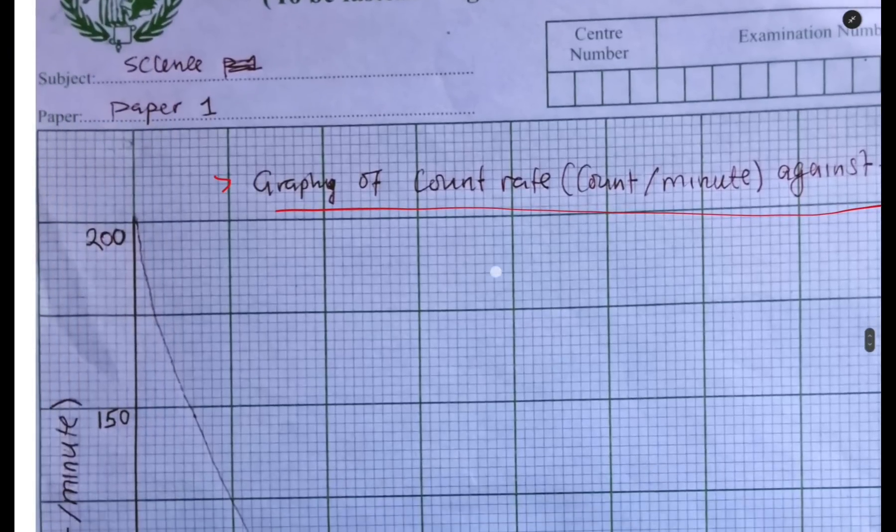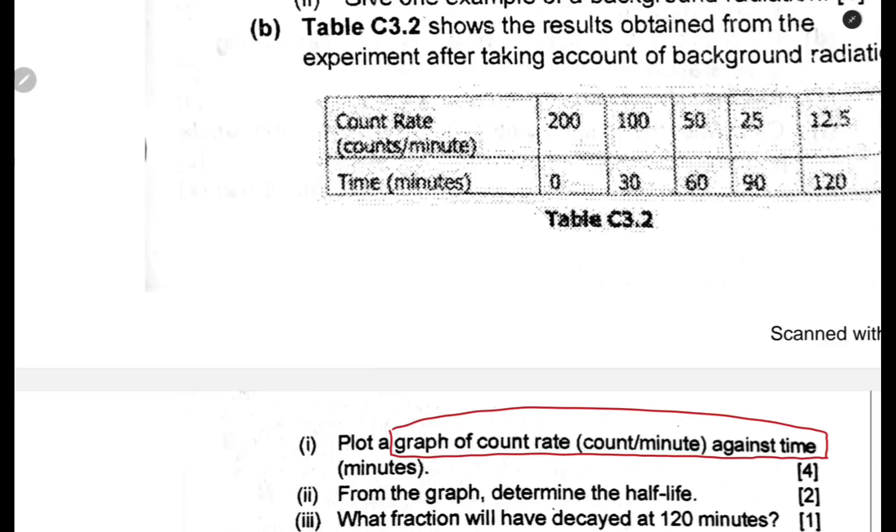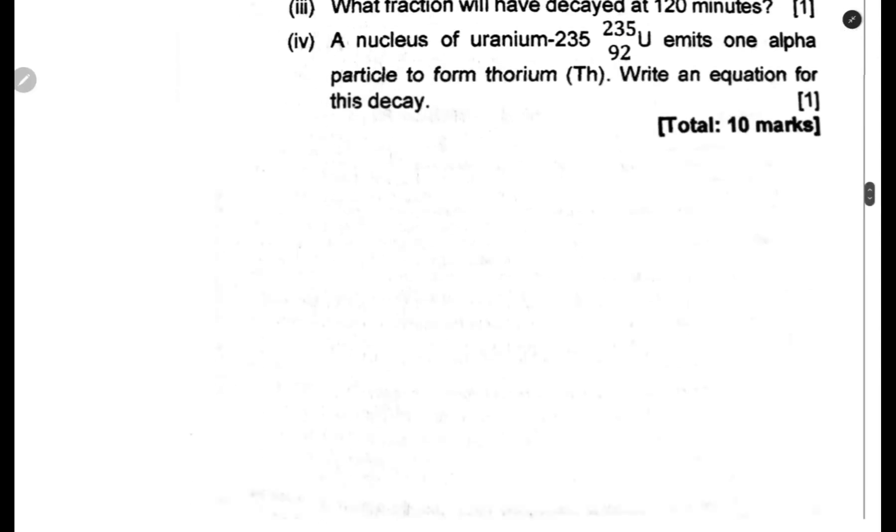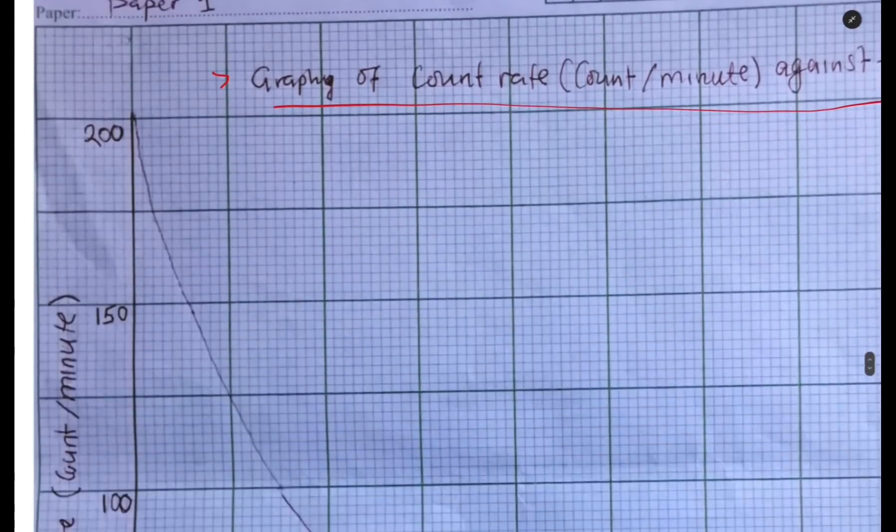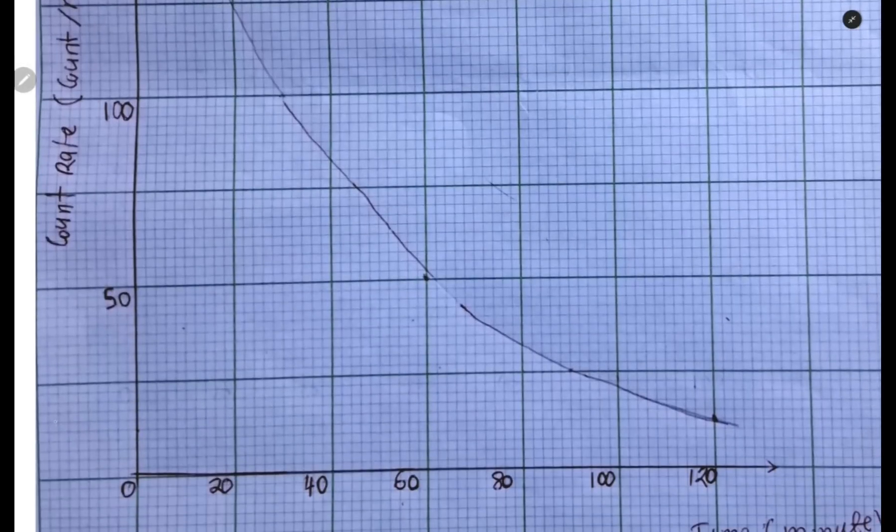Not like in mathematics where you are given a scale, here you have to come up with a scale. Look at the highest number on the count rate on the y-axis. The highest number is 200. We are using two centimeter boxes. For me, I've used four centimeters to represent 50 count per minute. Your scale should be indicated.